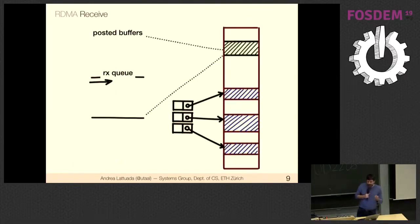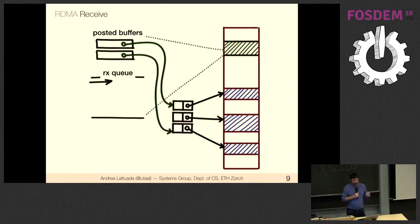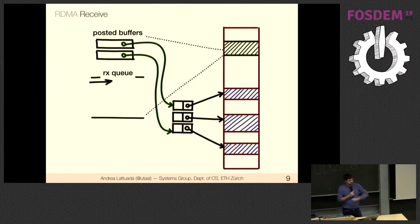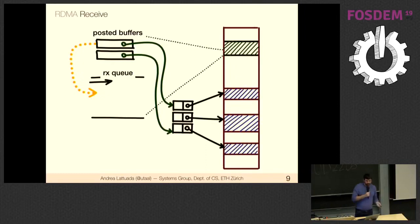For receiving data, we need to tell the hardware where to put incoming data. We maintain a list of posted buffers — memory areas designated for receiving. We say: post a couple of buffers because we're expecting incoming data. Whenever the NIC receives information, it doesn't consult us — it grabs the first available posted buffer, writes data into our memory without CPU involvement, and posts a completion on the receive queue.